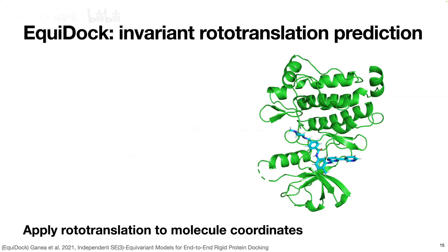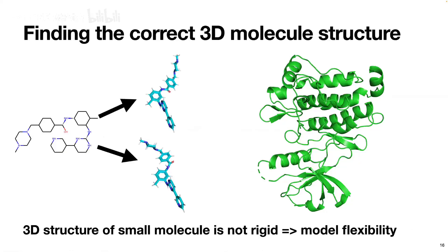If we do this, we would always be treating the small molecule as a rigid object. But this does not correspond to reality at all, where a small molecule could take on many possible 3D structures. Especially during binding it also changes its 3D structure—molecules are flexible objects and their 3D structure does not stay fixed. So we want to model this flexibility during binding to actually have a useful model in practice.